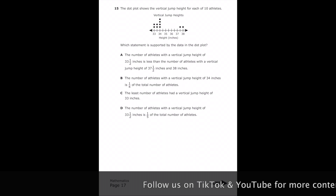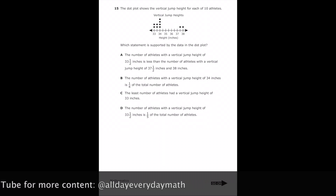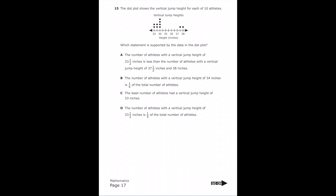Number 15: the dot plot shows vertical jump heights for 10 athletes. Letter A says the number of athletes with a jump height of 33.5 inches is less than the number with heights of 37.5 inches and 38 inches. The 33.5-inch mark has exactly two dots. The 37.5 and 38-inch marks have two total combined — so they're equal, not less. That's not true, so marking out letter A.